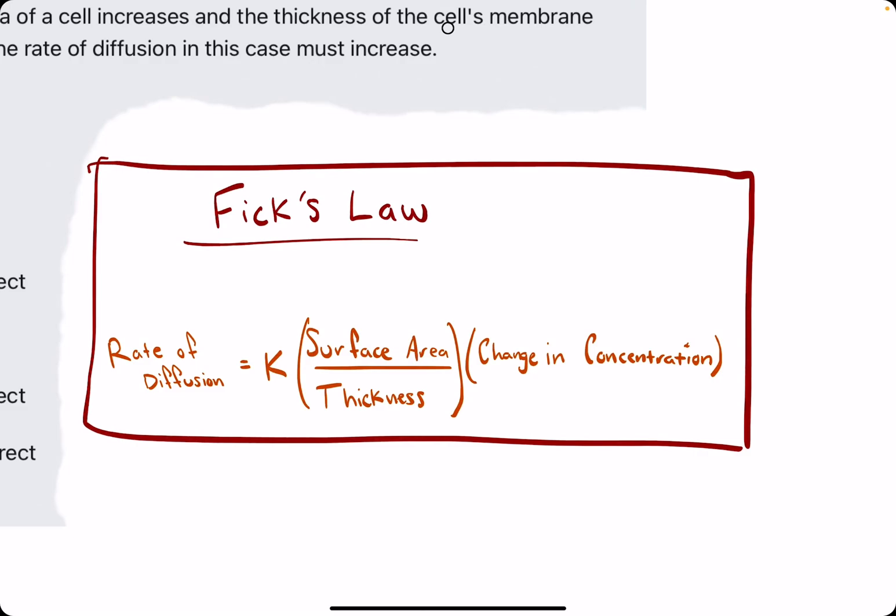So it's the rate of diffusion equals some constant k times the surface area over the thickness of the membrane times the change in concentration. The important thing here is pretty much everything on this side is in the numerator, more or less, besides the thickness. Thickness is the one denominator term to which the rate of diffusion will be inversely related to.